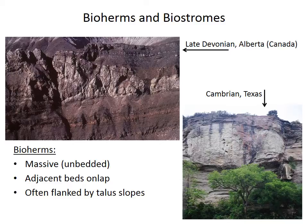The onlapping is most easily seen in the top left picture here of this Devonian bioherm from Alberta. If you trace the beds next to the reef, you'll find that they become thinner and closer together as they drape on or onlap on top of the reef.